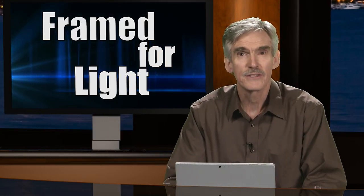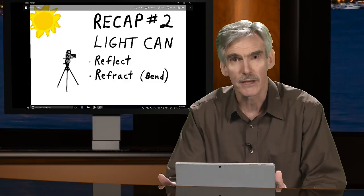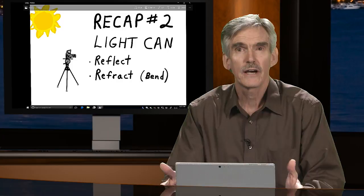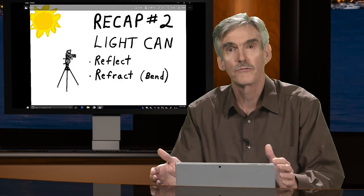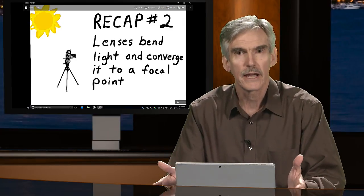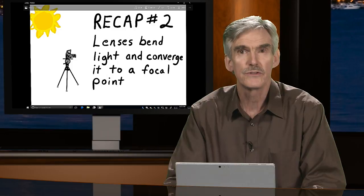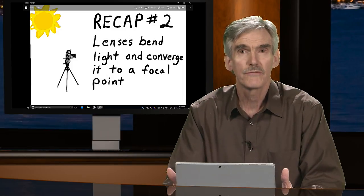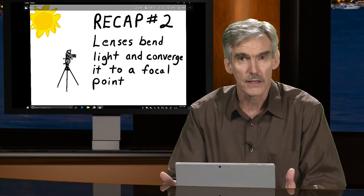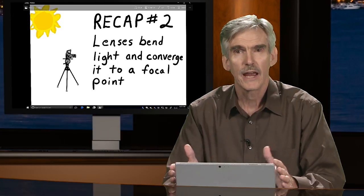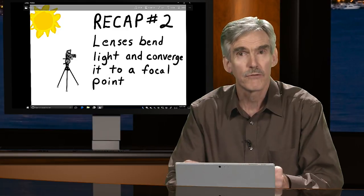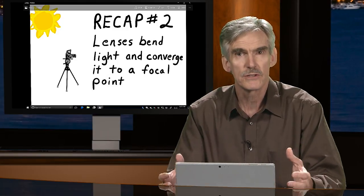Before we get started on today's main topic I'd like to do a recap of the previous episode, which was episode 2. In episode 2 we talked about how light can reflect and also refract or bend, and as a result of this ability to refract we developed lenses. Lenses are used to bend or refract light and they converge that light to a focal point.